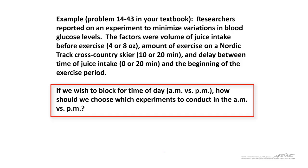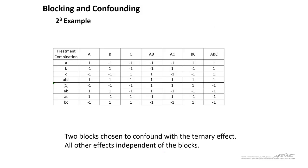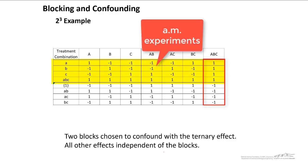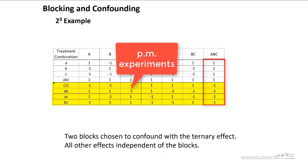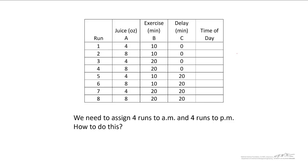The question is, if we wish to block for the time of day, how should we choose which experiments to conduct in the morning versus the afternoon? We can go back to our two cubed table here, where we've sorted by column ABC. We're going to choose little a, little b, little c, and ABC to be the morning experiments. That's in our principal block. And then the secondary block will be the bottom ones here. So it turns out that this second one is A, the third one here is B, and the fifth one here is C. The last one is ABC. And so we would put those four in the morning and the other four in the afternoon. So that's how we would assign these blocks for this experiment.